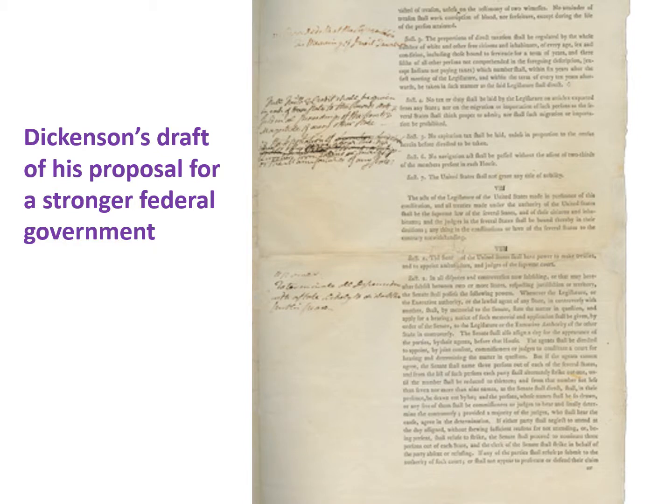In Dickinson's plan there'd be no executive, no president, but Congress could fight wars, raise an army, run the postal service, regulate trade, and it could borrow money and settle disputes between states. These last two provisions upset a number of states because they saw sovereignty — real control — lying with the state governments, not any national government that might be formed.